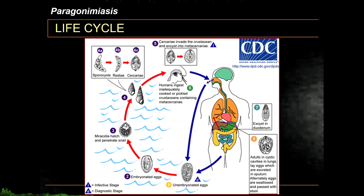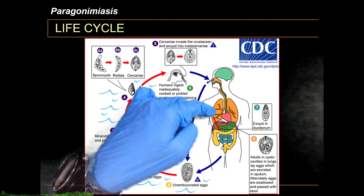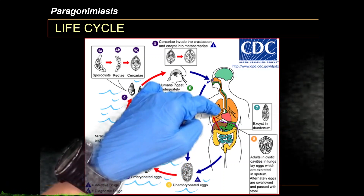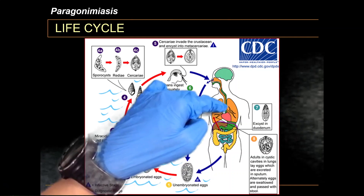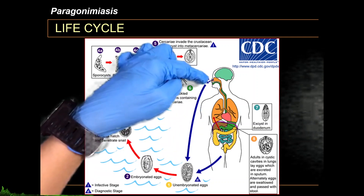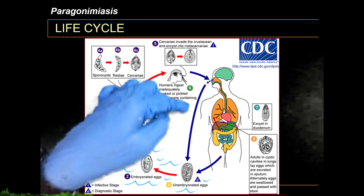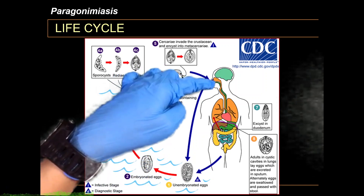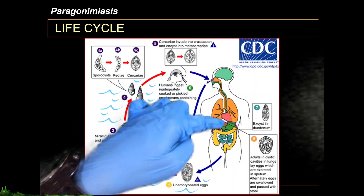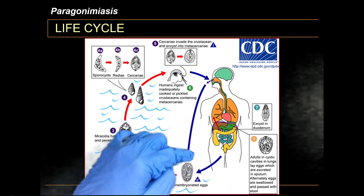Once inside the lungs, it matures into an adult worm and continually produces eggs. The eggs are deposited inside the lungs and act as an irritant, so mucociliary action propels them into the mouth where the human coughs them out. In some cases, the sputum containing the eggs is swallowed and travels the intestinal tract, where the eggs are eventually excreted with the stool.